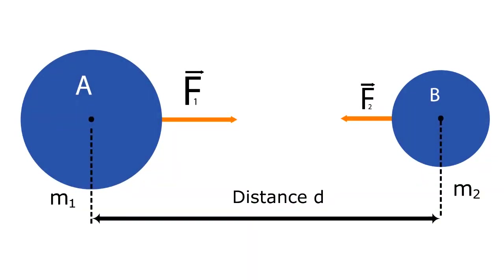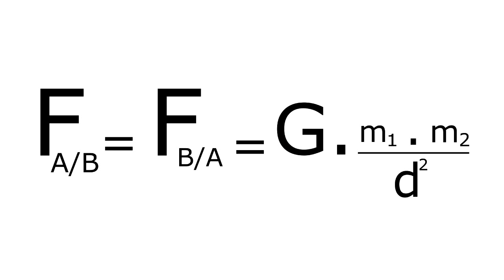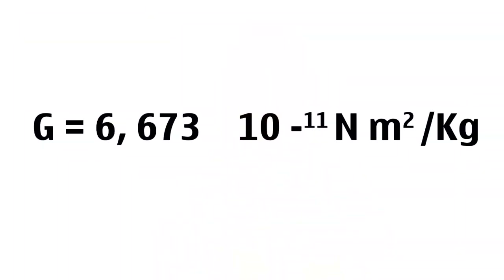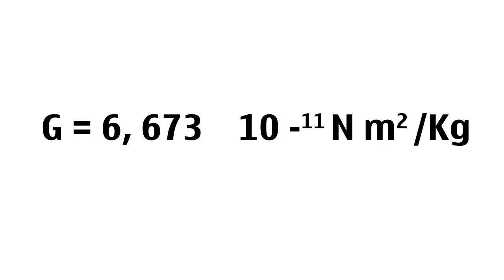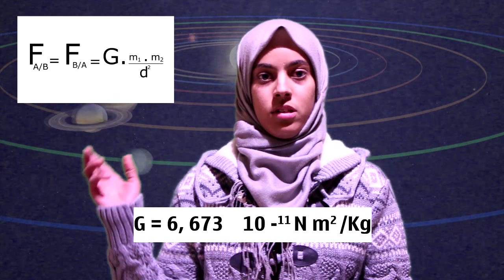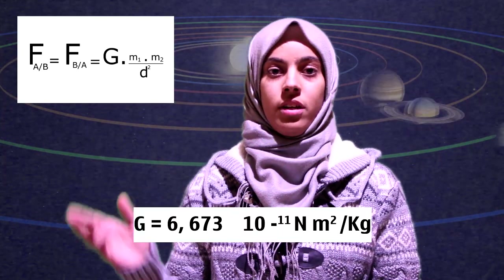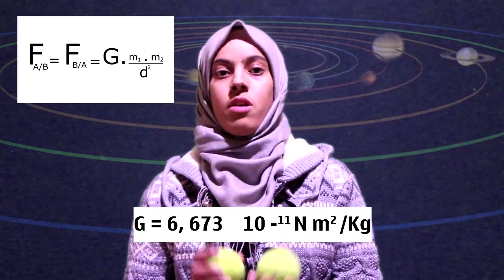If there are two objects A and B with two masses M1 and M2 separated by a distance D, then the universal gravitation between them is given by this formula: F equals G times the product of the two masses M1 and M2 over the square of the distance between them. The G here is the universal gravitation constant, and its value is approximately equal to 6.673 times 10 raised to negative 11 Newton meter squared over kilogram squared.